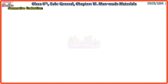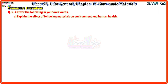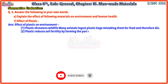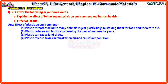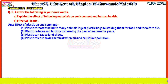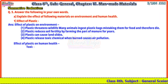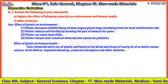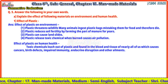Question 5 - Answer in your own words. First: Effects of plastic on environment and human health. Effect on environment: (1) Plastic threatens wildlife — many animals ingest plastic bags mistaking them for food and die. (2) Plastic reduces soil fertility by forming part of manure for years. (3) Plastic can cause landslides. (4) Plastic releases toxic chemicals when burned, causing air pollution. Effect on human health: Toxic chemicals leach out of plastic and are found in the blood and tissue of nearly all of us, causing cancers, birth defects, impaired immunity, endocrine disruption, and other ailments.